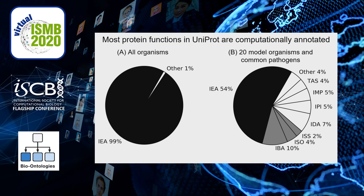More than 99% of protein function annotations in UniProt have the evidence code IEA in black. IEA, or inferred from electronic annotations, means the gene ontology term, or GO term for short, are computationally and automatically predicted without manual review. On the right-hand side, model organisms such as human, mouse, or E. coli have more manual review. But still, there are 54% IEA GO terms in black, 16% manually reviewed computational predictions in gray such as IBA GO terms, and the remaining 25% are from experimental literature in white.